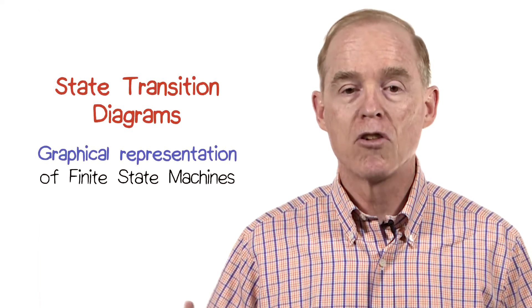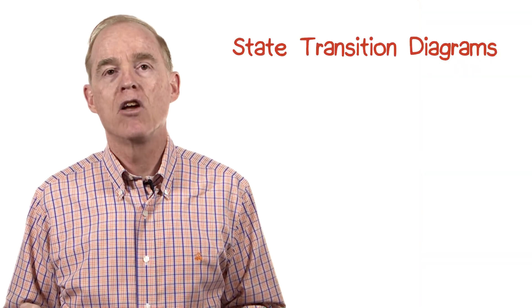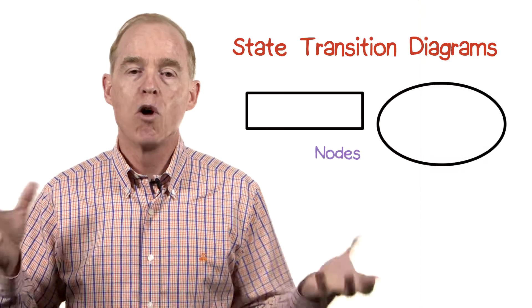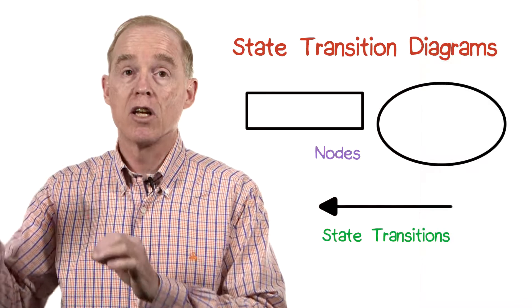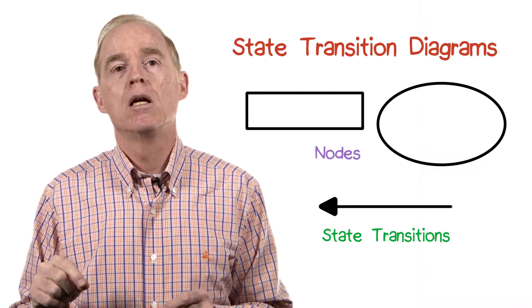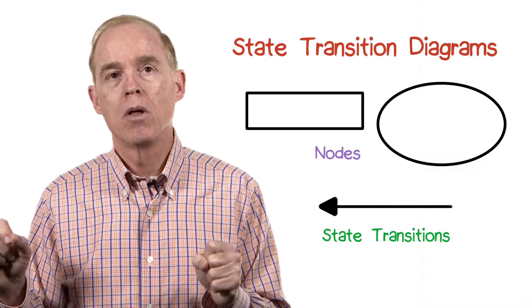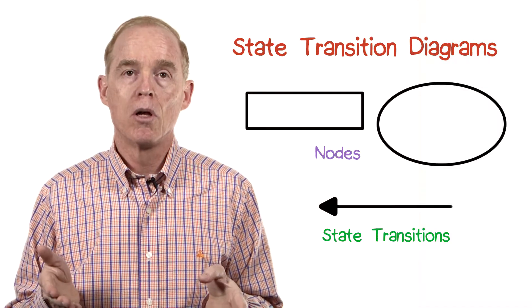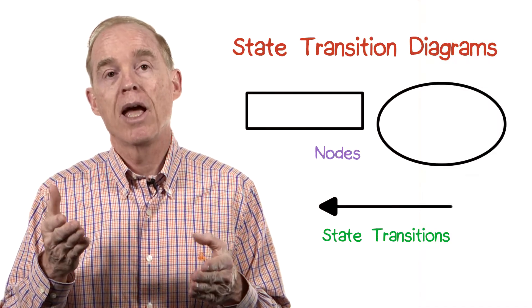These views are called state transition diagrams. They're essentially graphical representations of finite state machines. In these diagrams, we have an indication of a node, typically with an oval or some kind of rectangle. We have directed arcs connecting the nodes, indicating that there's a state transition. The arcs can be labeled with an action and a transition.